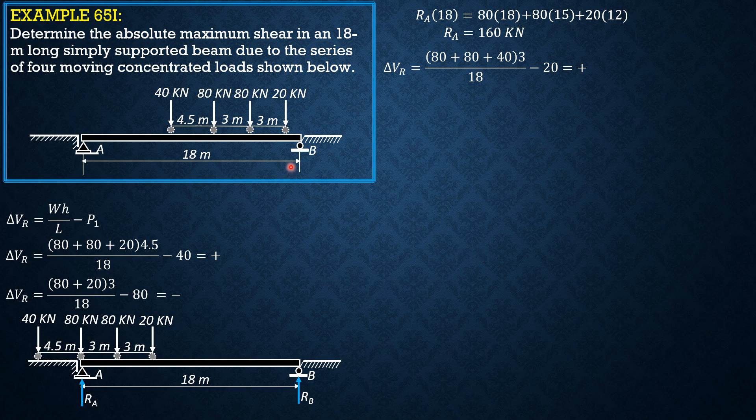So next, we move this 80 here over B. So our P₁ is this 80 here, our h is 3, and our W would be, since these are the two loads that remain on the span, 80 plus 40. So ΔVr is